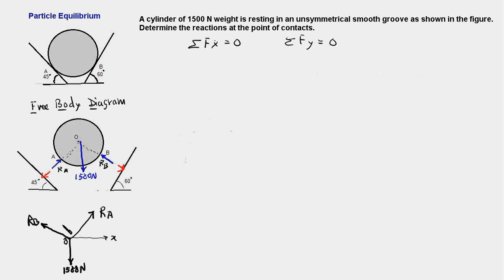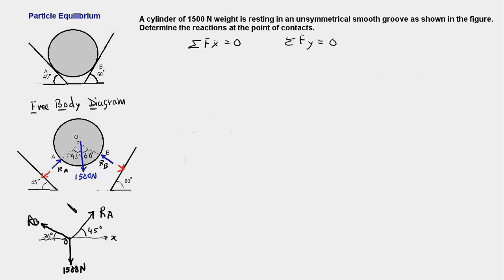Now, what are the angles these forces make with the axis? This surface makes an angle of 60 degrees with the horizontal, therefore this line would be making an angle of 60 degrees with the vertical, so this angle would be 60 degrees. Therefore with the horizontal, the line of action of Rb would be making an angle of 30 degrees. Similarly, this surface makes an angle of 45 degrees, and the line of action of Ra is normal to this plane, therefore this angle would be 45 degrees. So the force Ra makes an angle of 45 degrees with the horizontal x-axis.